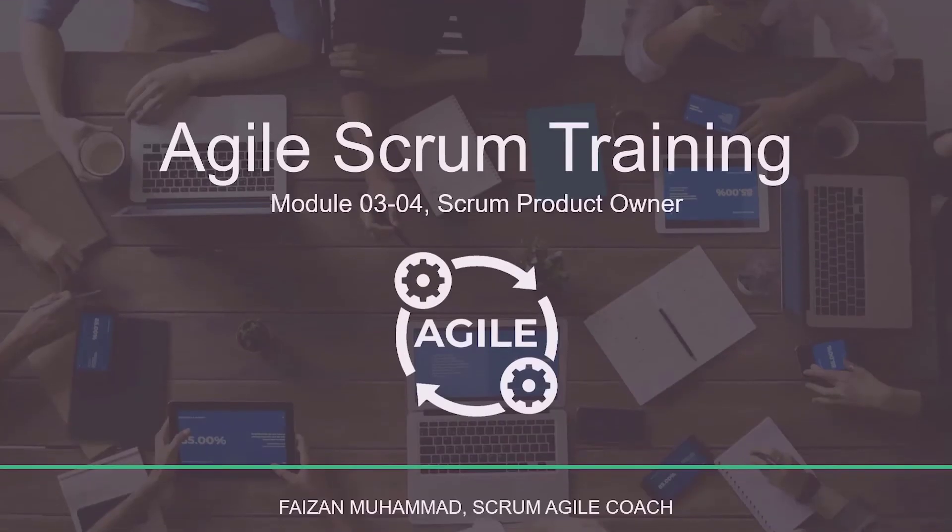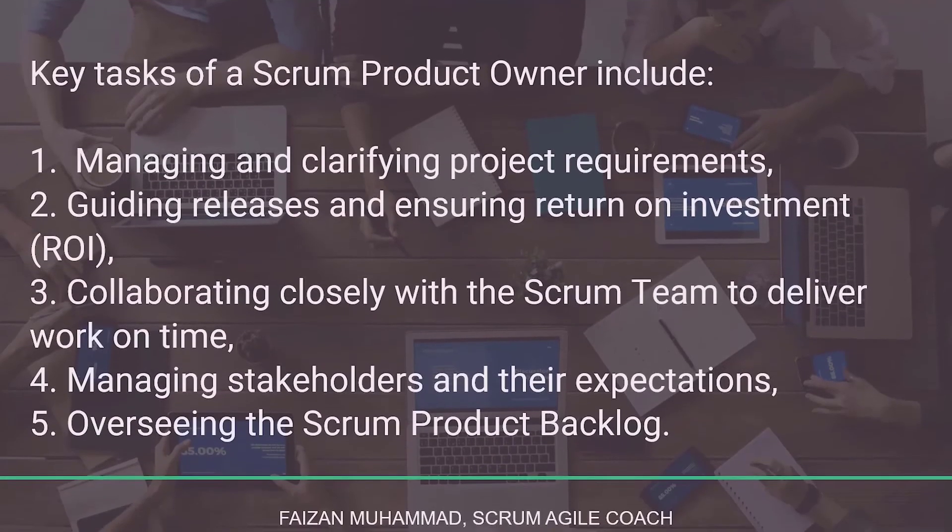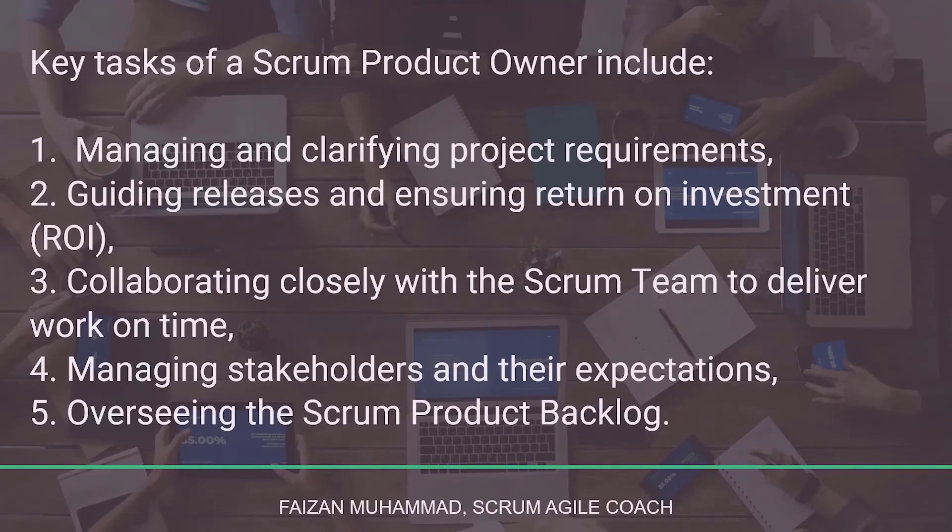Hello and welcome to this module on the role of the scrum product owner. The scrum product owner is a pivotal role within the scrum framework, combining aspects of product and project management while being deeply involved in software development and delivery. This role represents the end customers and stakeholders. The scrum product owner is responsible for maximizing the value of the product by ensuring the scrum team delivers the right work at the right time. Key tasks include managing and clarifying project requirements.